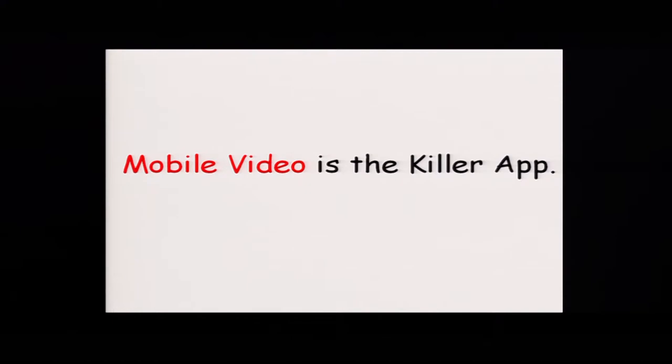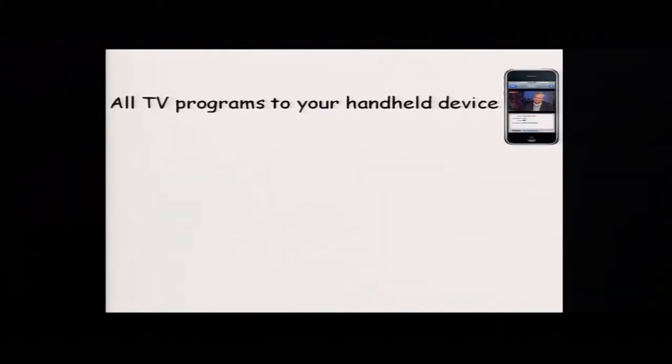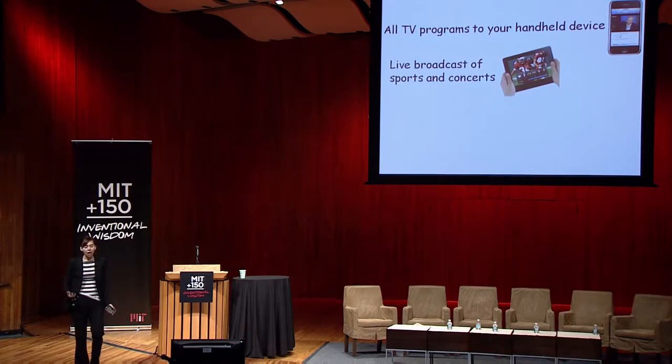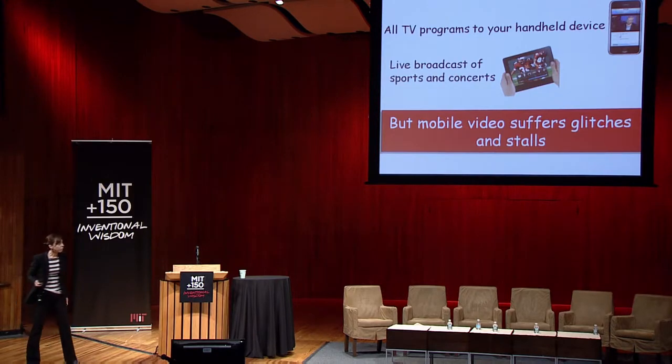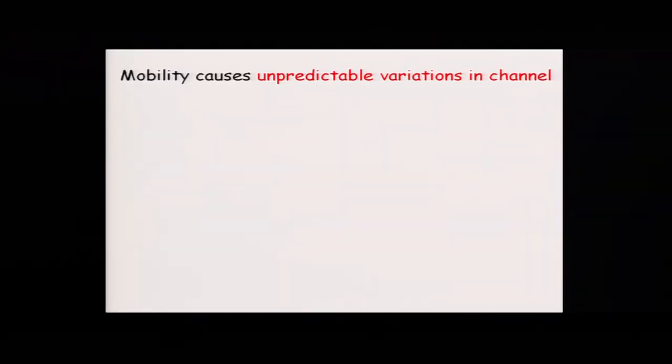This talk is about how we can get mobile video that does not glitch or stall. Mobile video is the next killer application according to all predictions. We are all excited about getting TV programs to our handheld devices, watching live concerts and sporting events on our tablets or PDAs. However, the question is how can we do this, given that mobile video today suffers from glitches and stalls all the time? The reason is that mobility causes unpredictable variation in channel quality between the transmitter and the receiver.